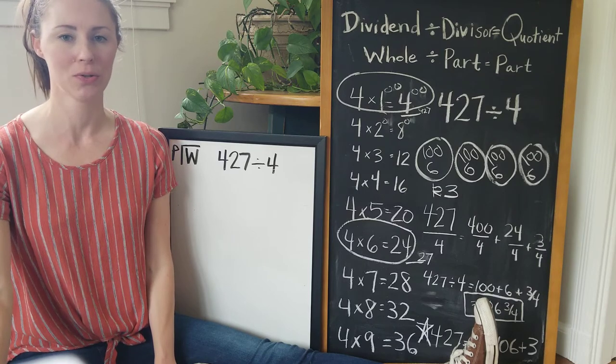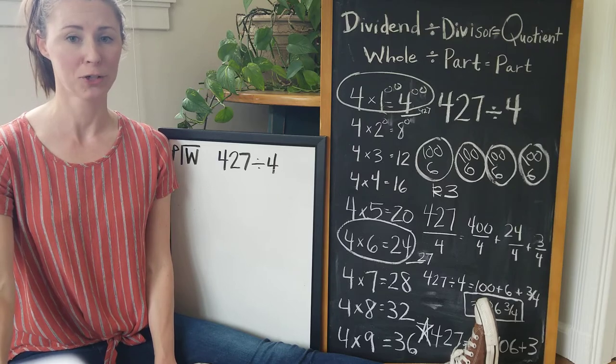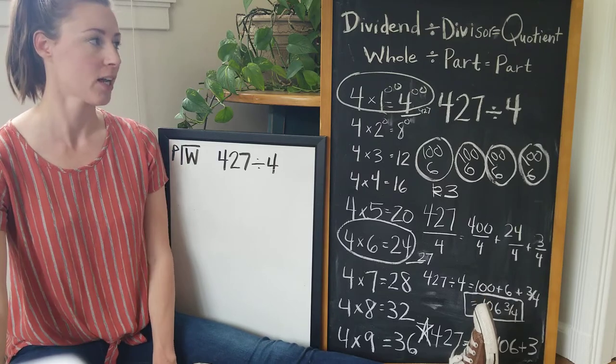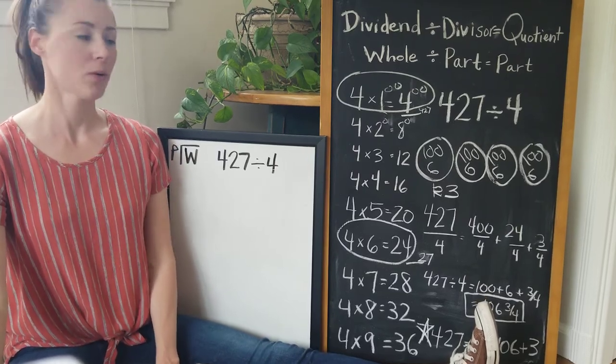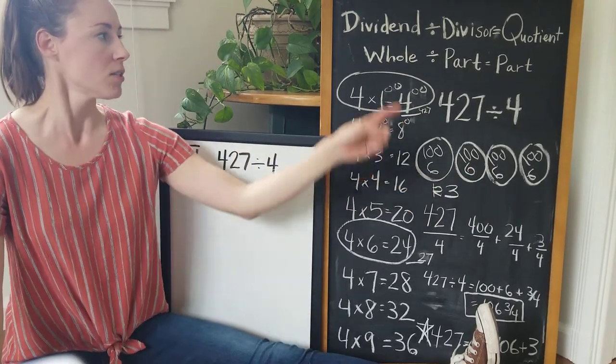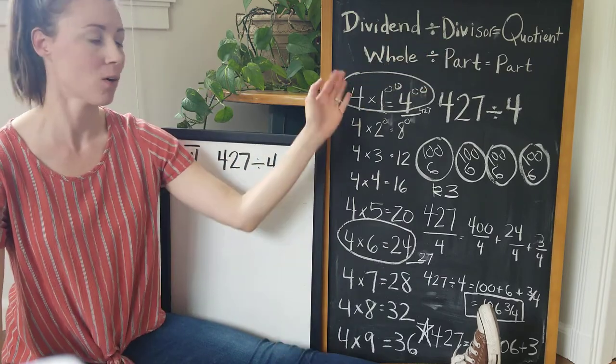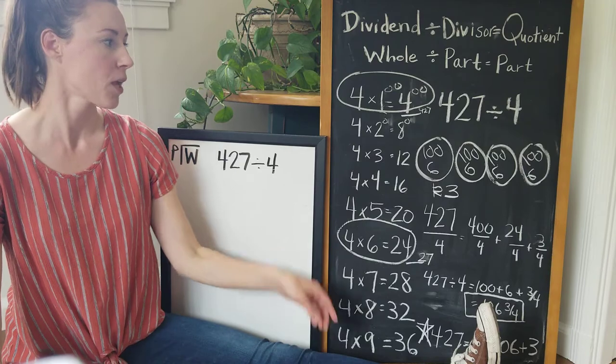It's similar to the way that your parents and myself learned back when we were in fourth grade. We are now moving away from actually having our equal groups and just symbolically thinking of those groups. So we have our dividend divided by our divisor equals our quotient, our whole divided by that part.